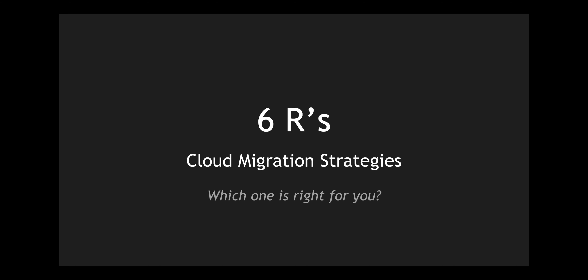In this video, we are going to look at six R's of identifying applications and figuring out what strategy we are going to take to migrate that application onto the cloud. If you're interested in reading about this, hit Google search with 'six R's' — Amazon has created a white paper around the six R strategy. I'm just going to explain the same in video format with some examples. Let's get started.